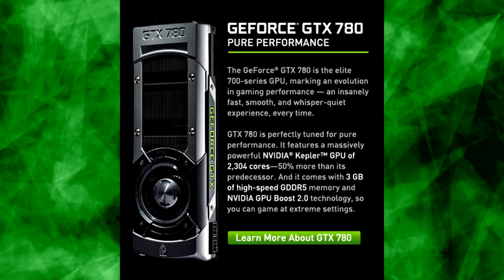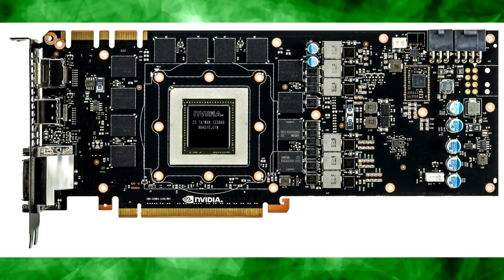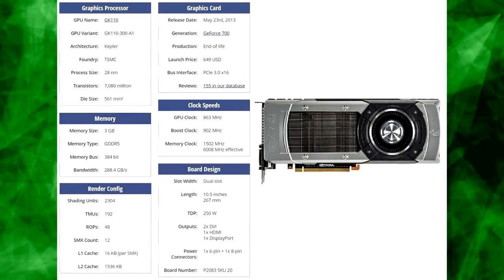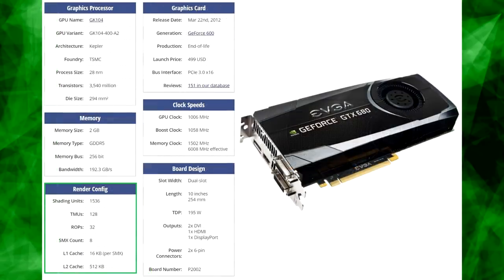Nvidia then launched the 700 series and stayed with the 28nm Kepler GPU, although many improvements to energy efficiency — especially regarding caching — led them to make much larger GPUs than the previous generation. The GTX 780 and its GK110 Kepler GPU had 40% more CUDA cores than the GTX 680 with its GK104.